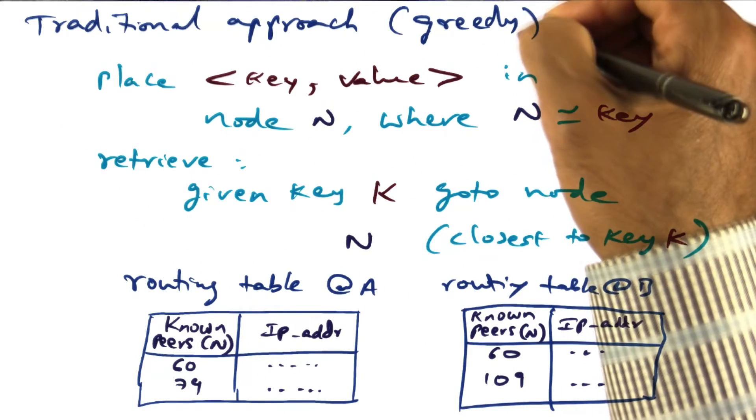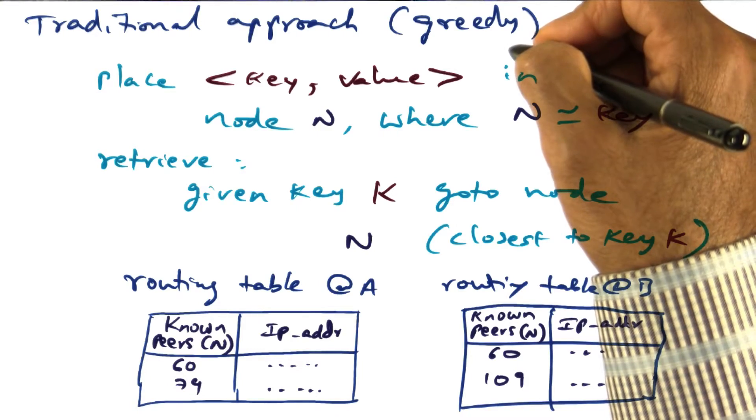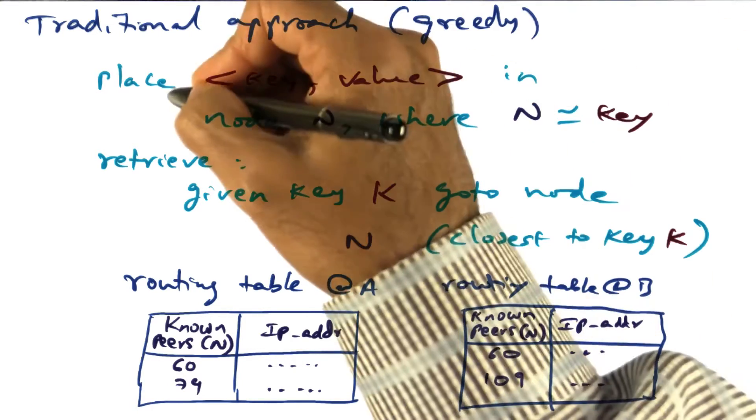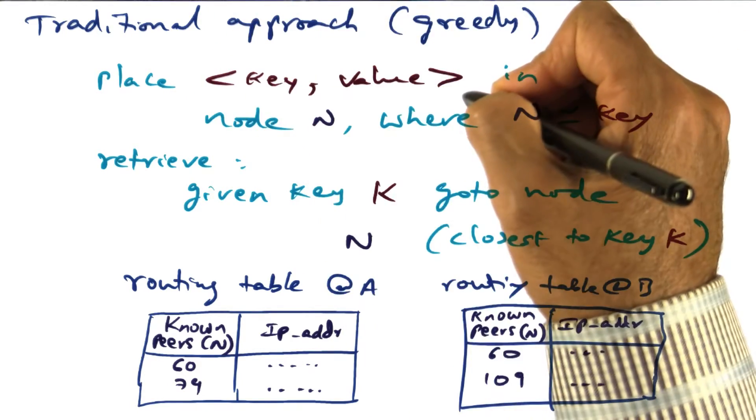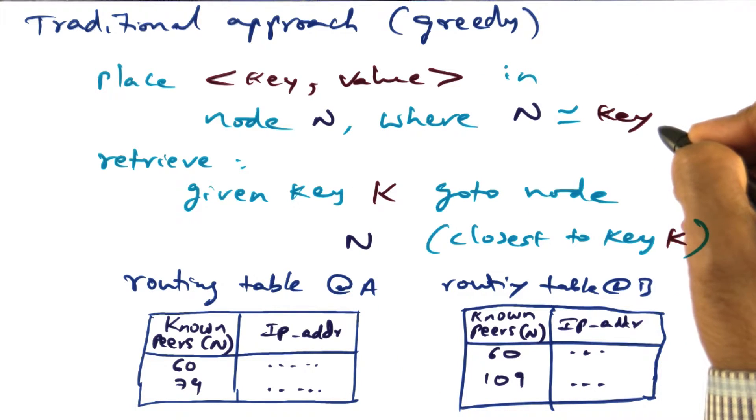The traditional approach, which I'll call the greedy approach, in constructing distributed hash table, is when you want to place a key value, you pick a node n, where n is very close to key.